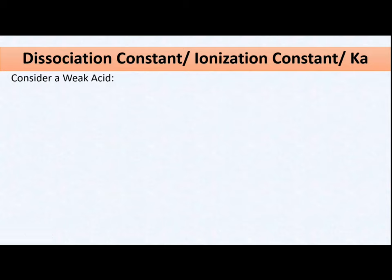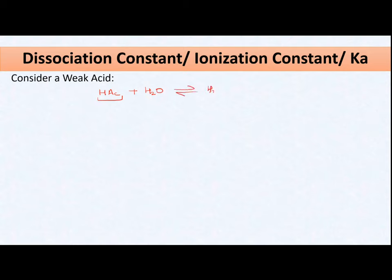Before understanding what the dissociation or ionization constant is, let us consider an example of a weak acid. Here, let's assume this is a weak acid — any weak acid with a proton attached to it. When I add water to it, because it is weak in nature, it will partially dissociate into H₃O⁺ positive ion plus the A⁻ anion.